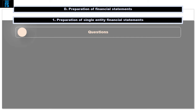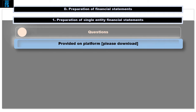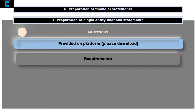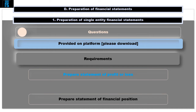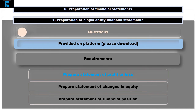So let's take a look at the question, and I suggest that we start by inspecting what it is that we are actually required to do. The requirements are broken down into three parts: first, to prepare the statement of profit or loss, then to prepare the statement of changes in equity, and finally the statement of financial position. In this video we will focus on the first requirement only, leaving the statement of financial position and the statement of changes in equity for the next section.